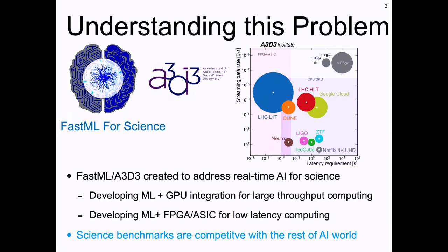This realization led us to build an NSF institute from the 'harnessing the data revolution' domain. Before we founded the institute, we founded a community called the Fast Machine Learning for Science community. Our goal, both with our institute called A3D3 and at Fast Machine Learning for Science, is to address the problem of real-time AI in science.